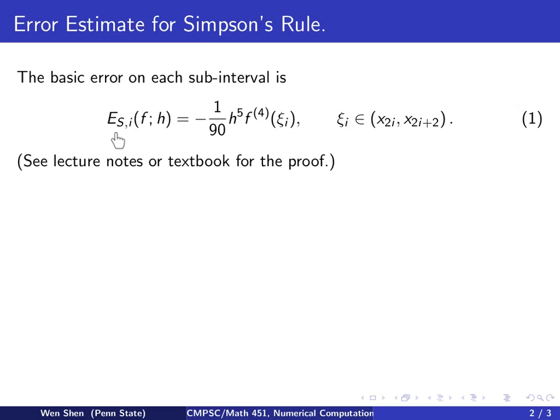An error for Simpson's rule on interval number i for function f with grid size h equals negative 1 over 90 h to the 5th f to the 4th derivative at some ξi, where ξi is some number lies on the interval between x2i to x2i plus 2.